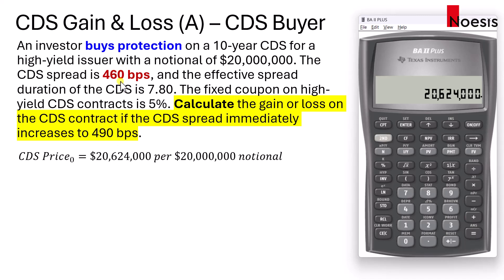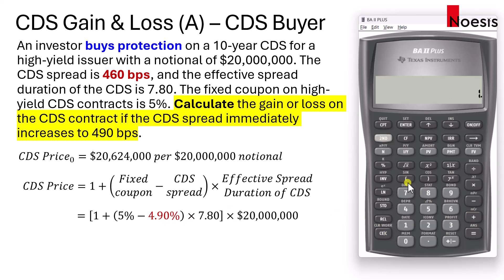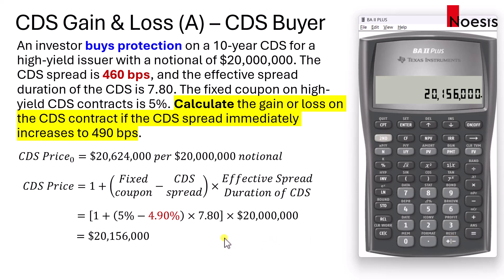We observe that the spread increases by 30 basis points. We recalculate the CDS price using the new CDS spread, which is 4.9%. Taking 1 plus bracket 0.05 minus 0.049 close bracket times 7.8, and multiplying the whole thing by $20 million, the CDS price would have dropped to $20,156,000.